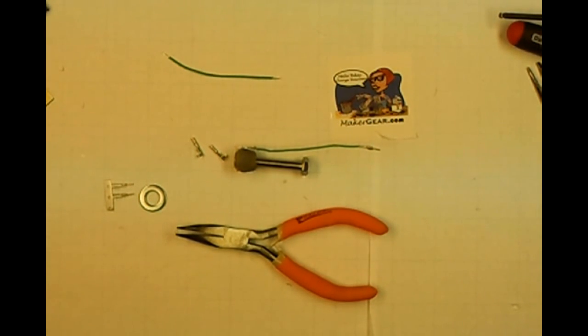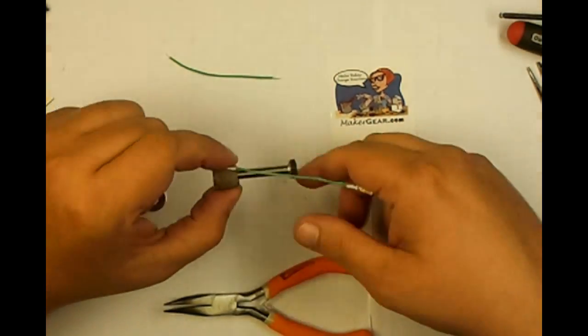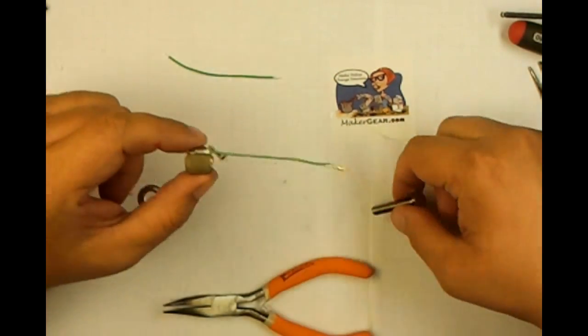Neil here again at FabLocker. Now we're going to assemble a heater core. I've already done one half of it, so we'll go ahead and show you how to do the other half.